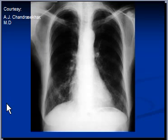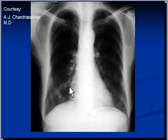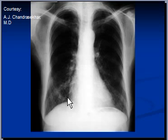Right middle lobe collapse can often be missed on a frontal radiograph, as in this case. But if you do see a collapsed right middle lobe on a frontal film, you will notice that the horizontal fissure has moved inferiorly and medially as a result of collapse. Often the right heart border will not remain visible — a positive silhouette sign — and often the medial border of the right hemidiaphragm is raised as a result of collapse.